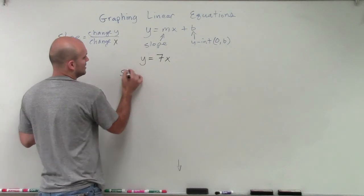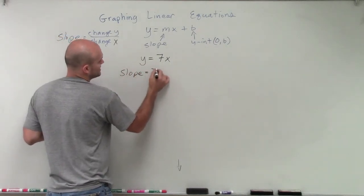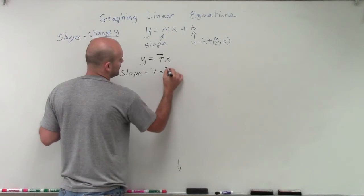I have my slope, so I can determine that my slope is going to equal 7. All right, that one's easy, and we can just rewrite that as 7 over 1.